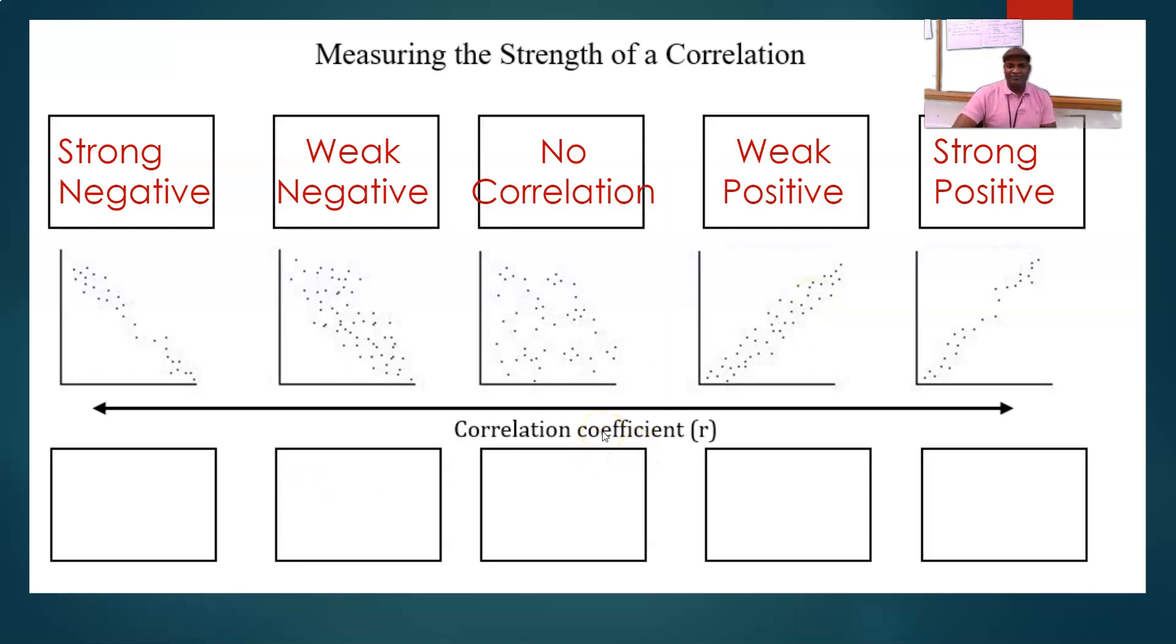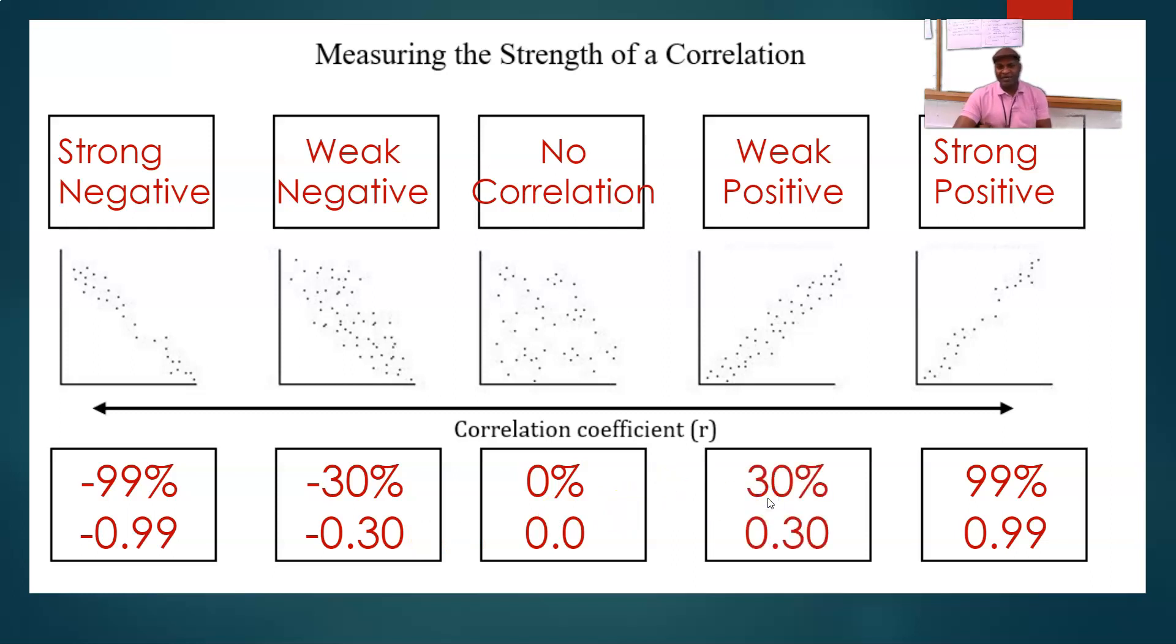Now, we also have a number that we associate with these as a measure of the strength of a correlation called a correlation coefficient. For a strong negative, we would assign a value about minus 0.99. That's a strong negative. Strong positive would be, of course, 99% or 0.99. No correlation would be 0 or 0.0. A weak negative would be like minus 3 tenths or 30 hundredths. And a weak positive would be positive 30 hundredths.